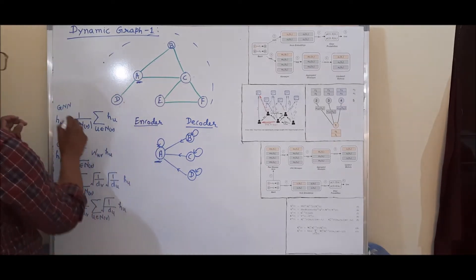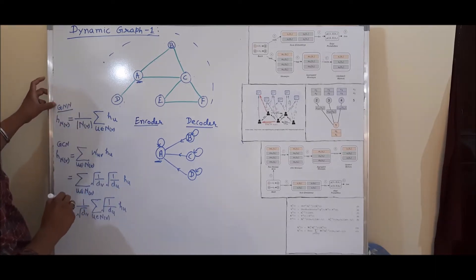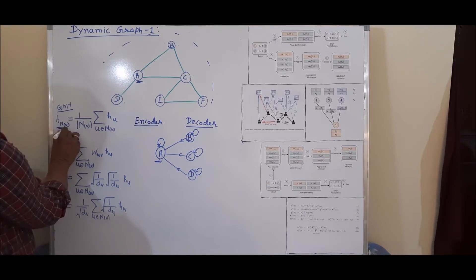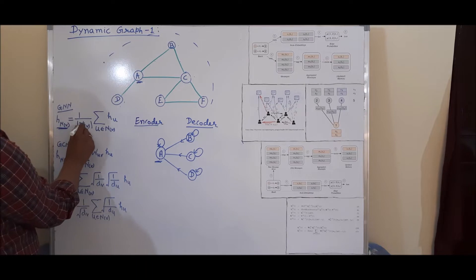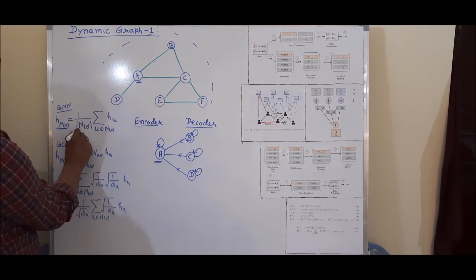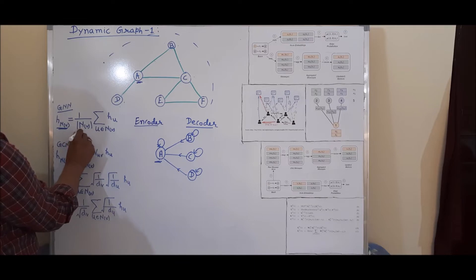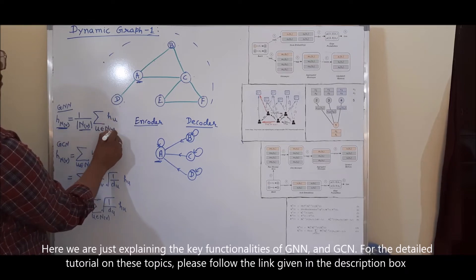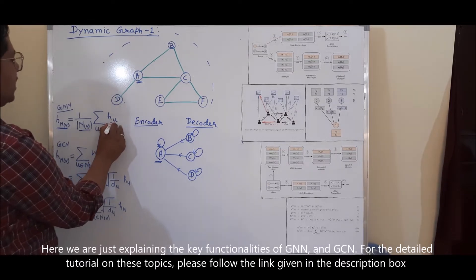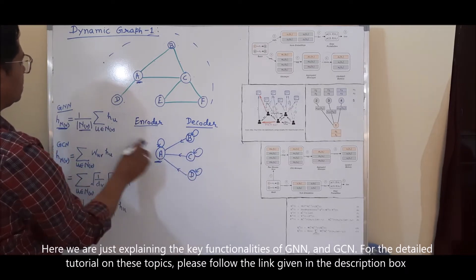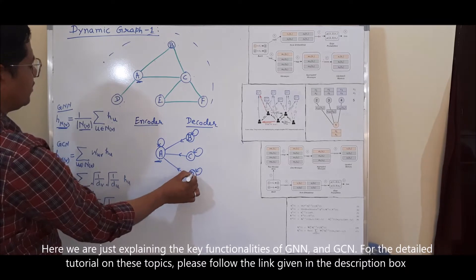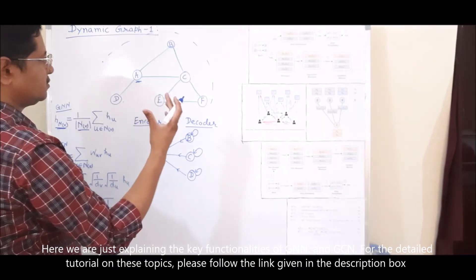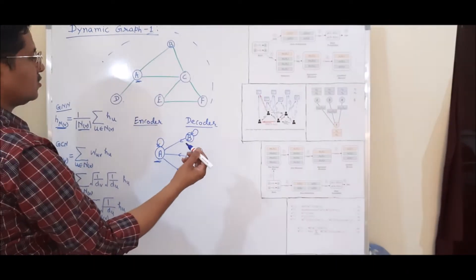In a traditional graph neural network architecture, to compute the node embedding for any node V, we take the average by dividing by the total number of neighborhood nodes and summing all hidden layer outcomes from all neighbor nodes. This is the simple deep neural network architecture. For more details on this architecture and its drawbacks, you can refer to my video tutorials on graph neural network architectures.